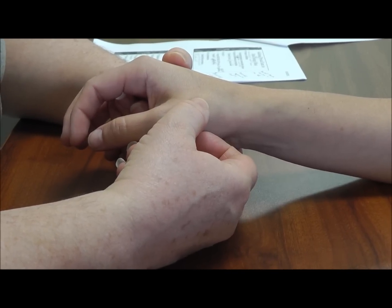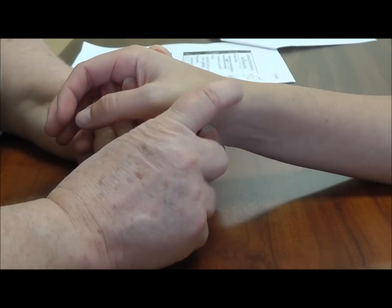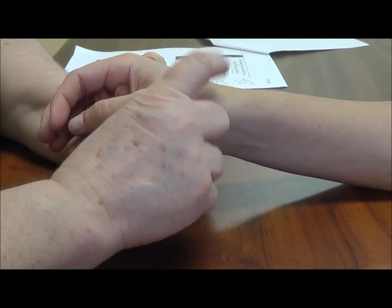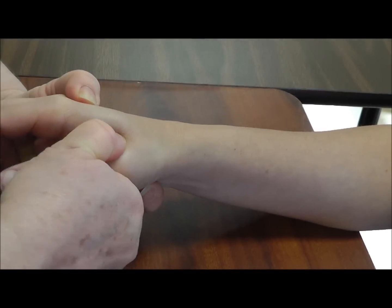You could also rule out a radial sensory nerve. So you could again do your Tinel's here in this area versus more of a palpation and a grind for OA.